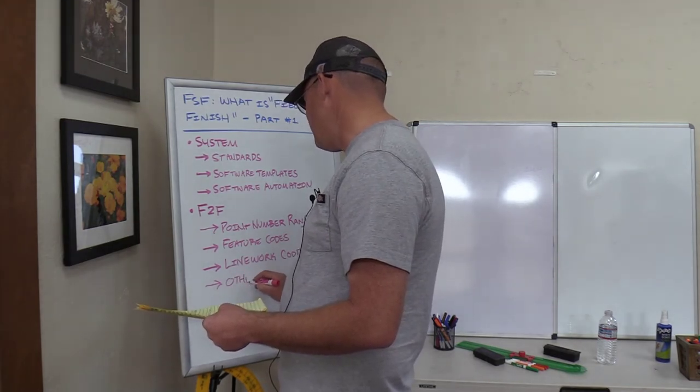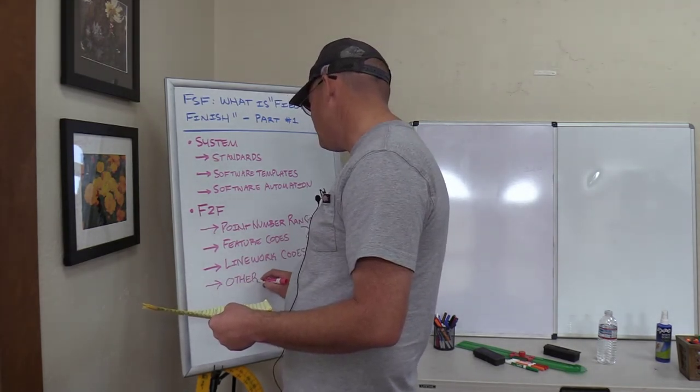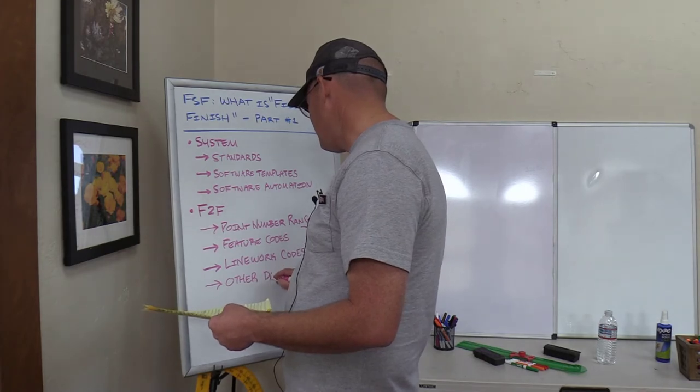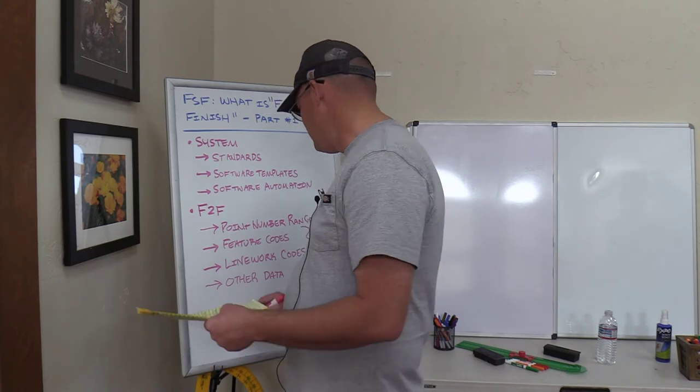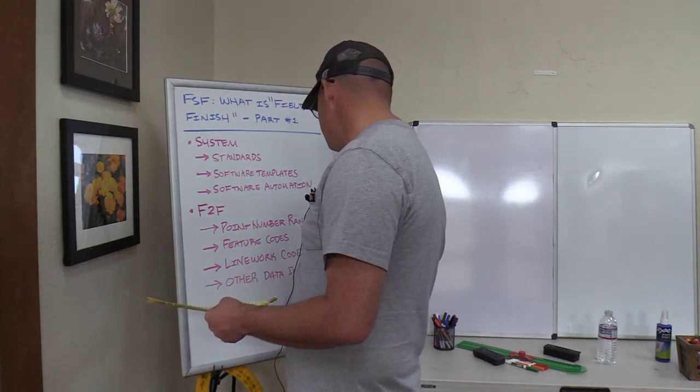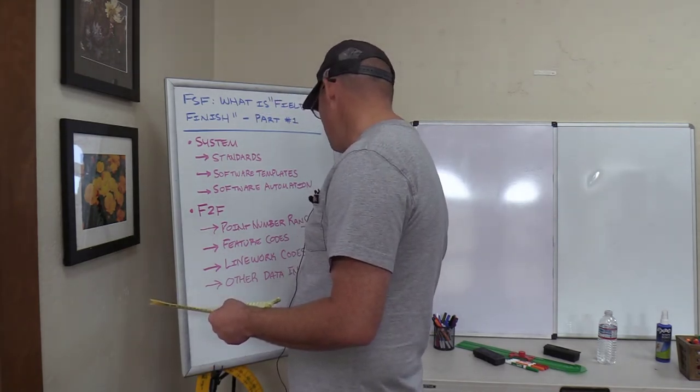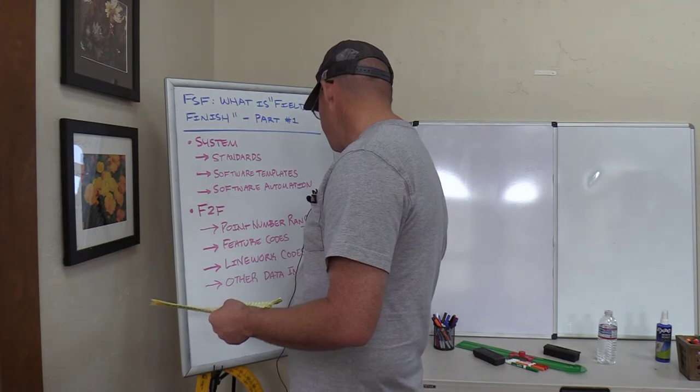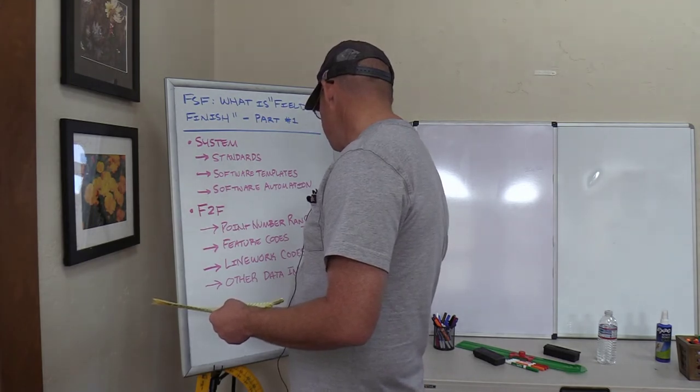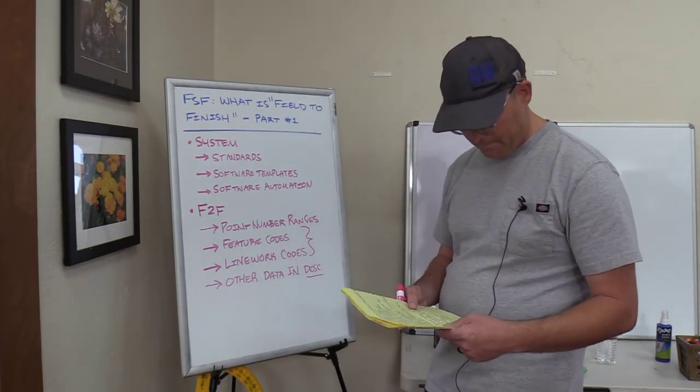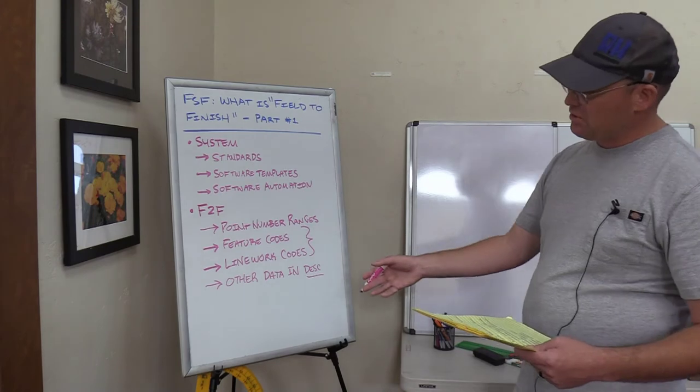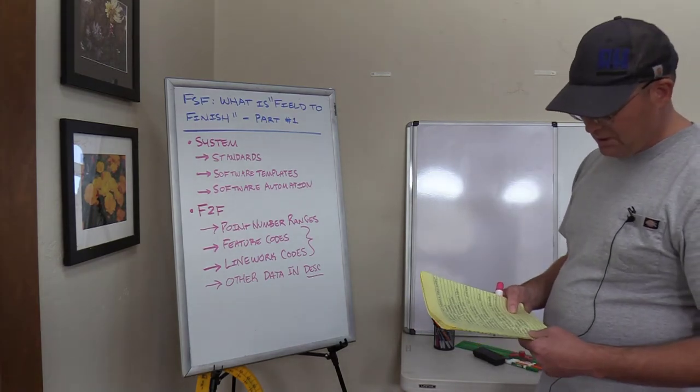And then any other data that you want to embed in your point description. Like I mentioned, whether or not the point gets included in the surface, or maybe the date it was collected, or maybe it's whether or not it's a utility point or not. So any other data that's relevant to your organization that you can embed in the point description. So those are the parts of a traditional field to finish system.